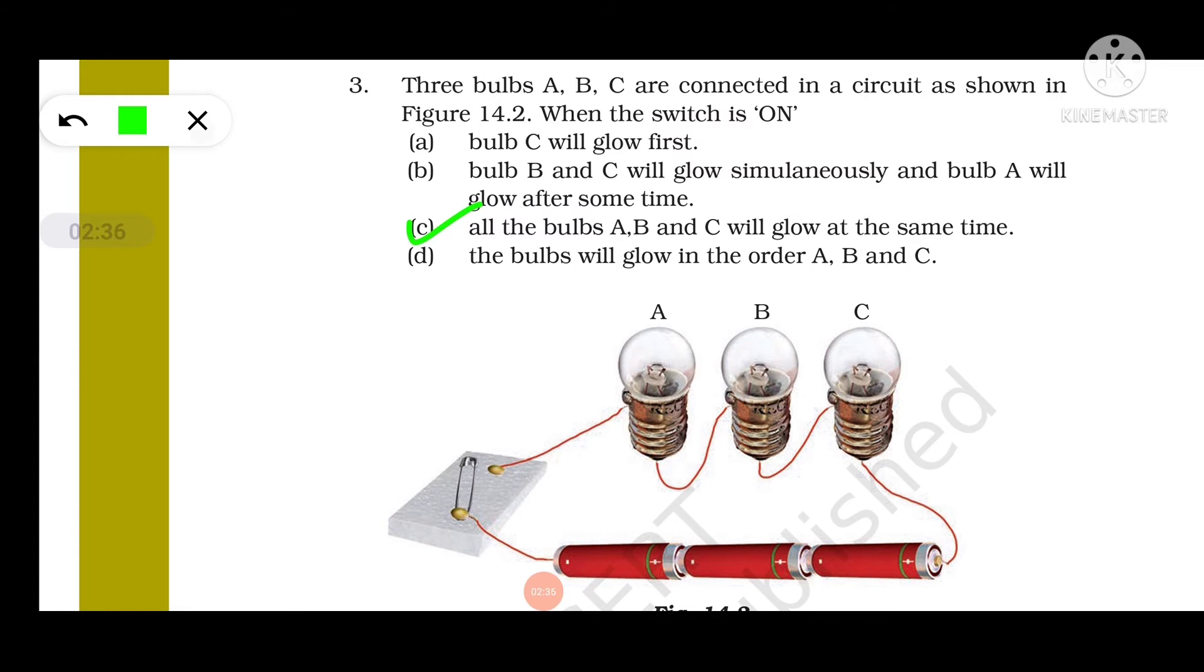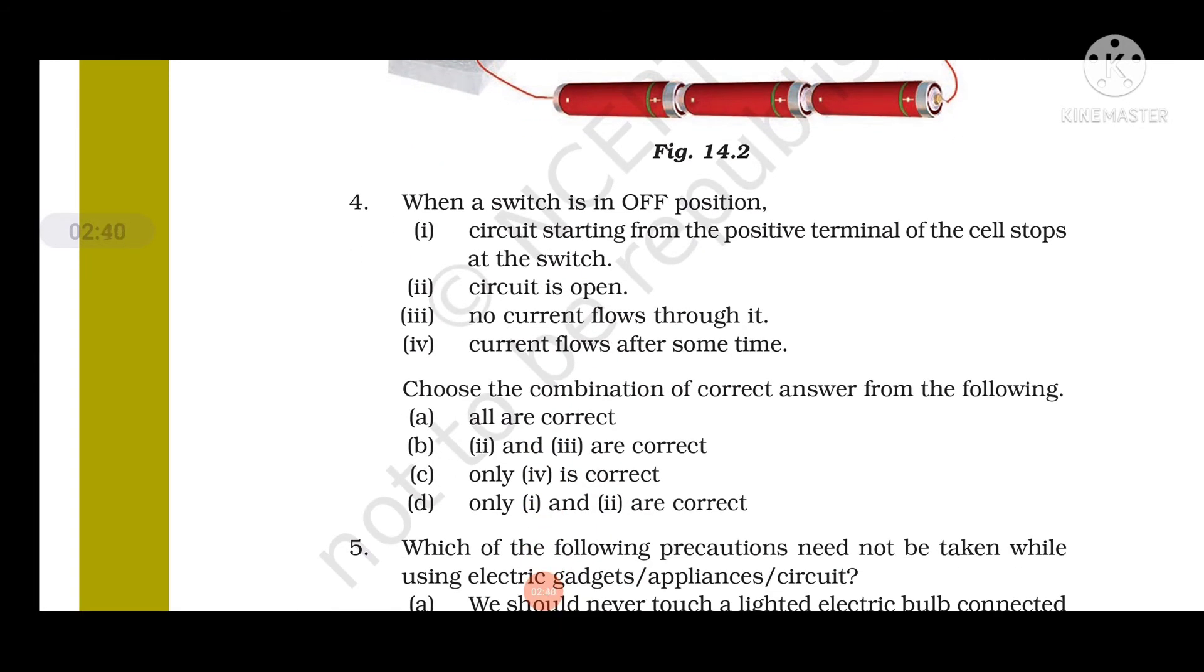Question number 4: When a switch is in off position, the circuit starting from the positive terminal of the cell stops at the switch. The circuit is open, no current flows through it, and current flows after some time. Now we have to choose the correct combination of the correct answers. So options 2 and 3 are correct. Because when the switch is in off position, that is called open circuit. When switch is in on position, that is called closed circuit. When the switch is off, no current will flow.